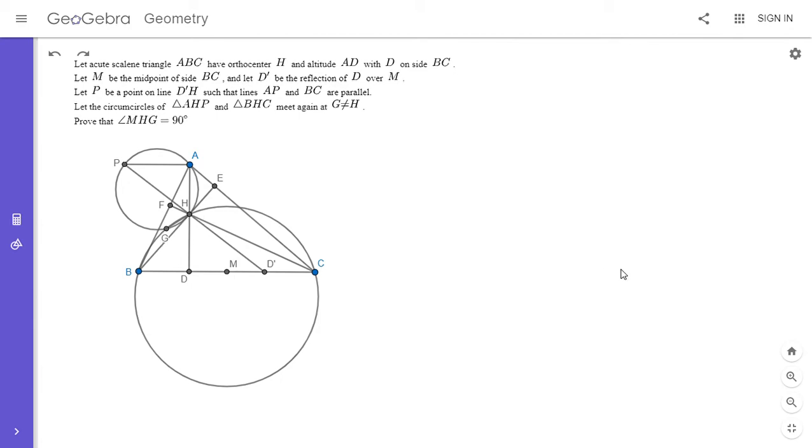I'm going to start off with a trick that I'd seen before that I feel greatly simplified the problem. I'm going to hide this circle through B, H, and C temporarily because I'm actually going to show that if we draw the point so that BACJ is a parallelogram, then J actually lies on the circle.